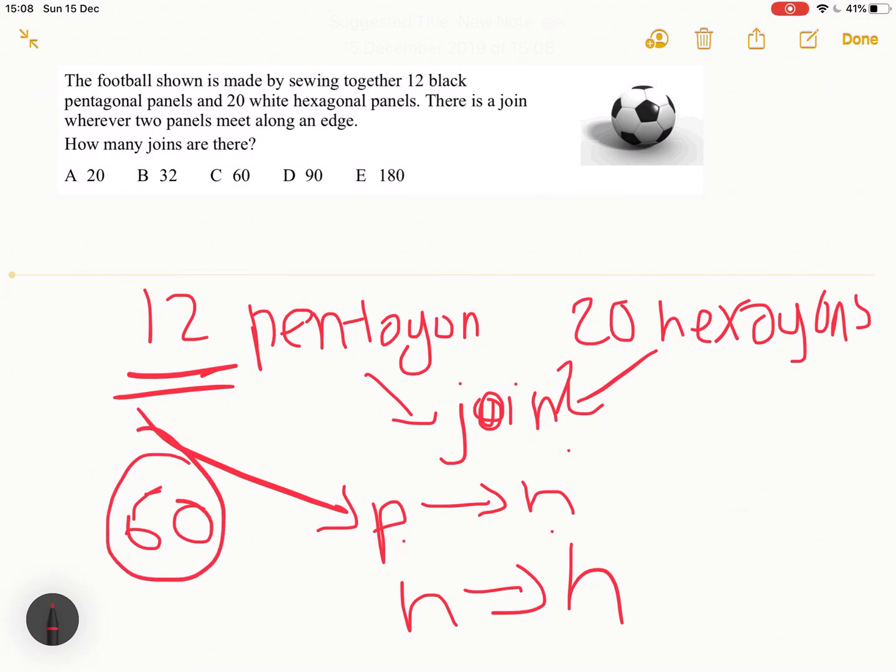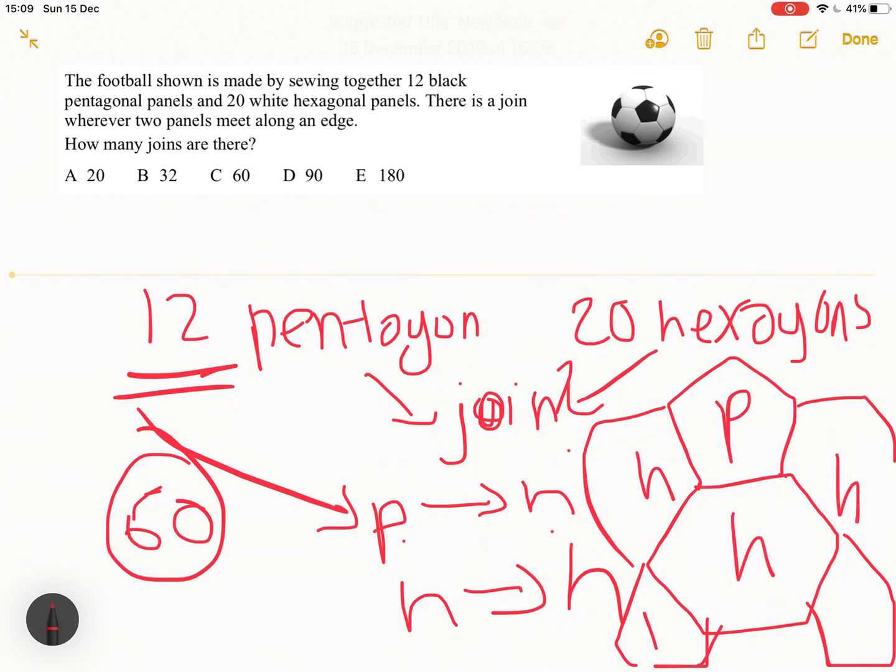For the pentagon-hexagon joins. Now, for the hexagon-hexagon joins, it's a bit more complicated. So if you draw a hypothetical hexagon in this and then we have our black pentagon here and then our pentagon here again and then here again, and then we have our hexagon here, hexagon here and hexagon here. So that's a hexagon and these are pentagons.